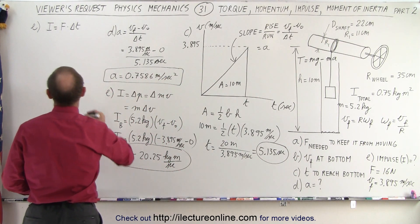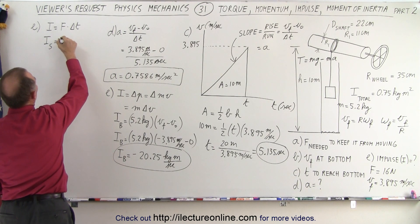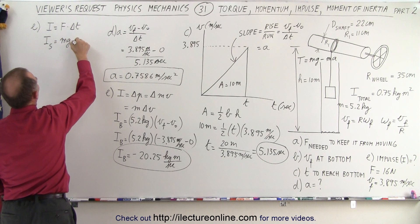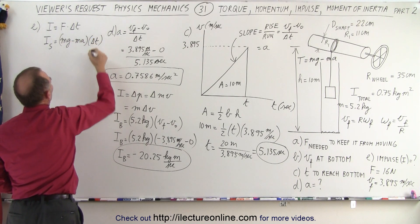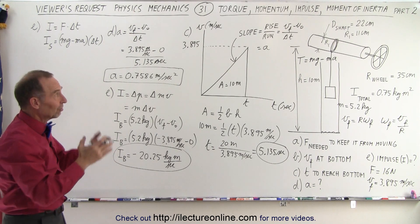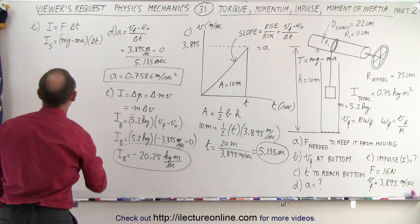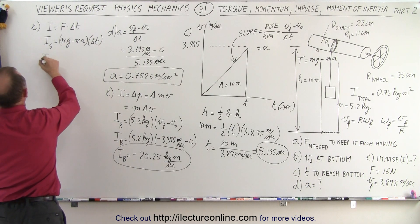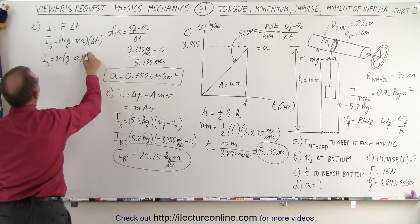So what we can then do is that the impulse on the shaft is equal to the force, which is mg minus ma multiplied times the delta T. So in other words, impulse is also defined as force times delta T. In this case, the force on the shaft is mg minus ma. All right, so let's go ahead and plug that in. So I on the shaft is equal to the mass times g minus a times delta T.